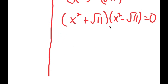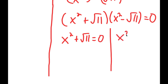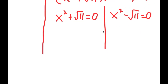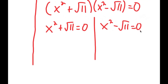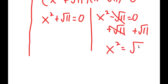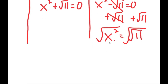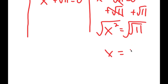Again I get two equations: x squared plus the square root of 11 equals 0, and x squared minus the square root of 11 equals 0. For x squared minus the square root of 11 equals 0, I'm going to add the square root of 11 on both sides. So these two cancel out, and I get x squared equals square root of 11. Now if I take the square root on both sides, the square root of x squared is x, and the square root of the square root of 11 is the fourth root of 11. This is positive or negative.